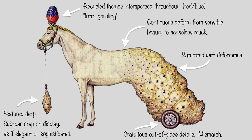Another strategy of the protocol: continuous deform from sensible beauty to senseless muck. So we've got a fairly elegant thing going on over here, this beautiful creature, and then it slowly morphs or bastardizes into this goofy caboose thing, or very ugly deformed blob. Next up: saturated with deformities. So we see these weird corpuscles, or blemishes, and knobby blobby deformities.